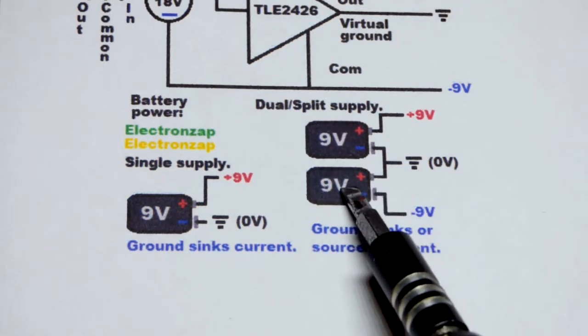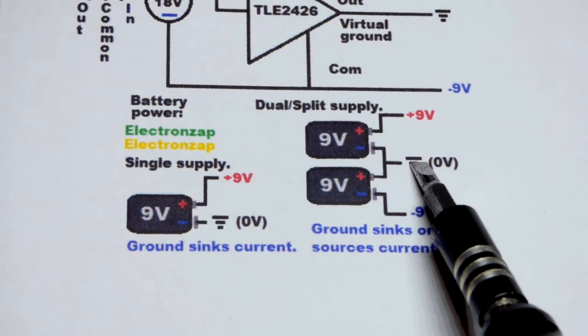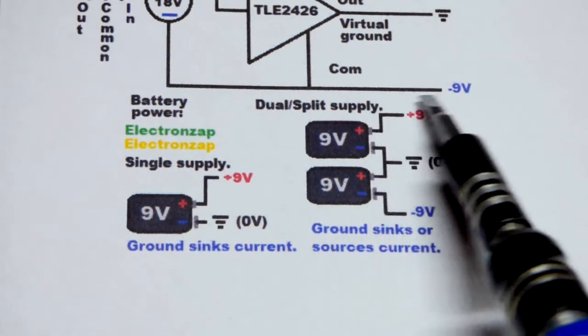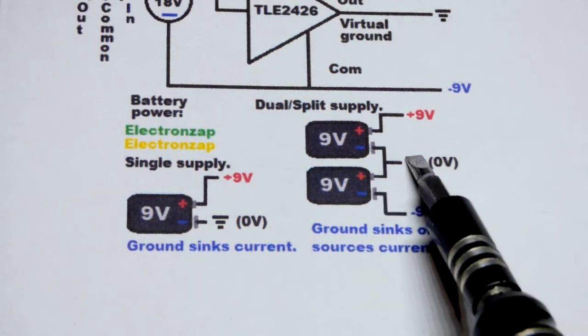But if we put two batteries in series, two 9 volt batteries, and declare where they connect together as ground, then we will have positive 9 volts on that side, and then negative 9 volts on that side.